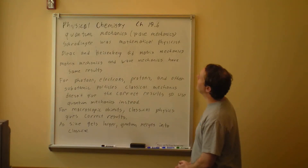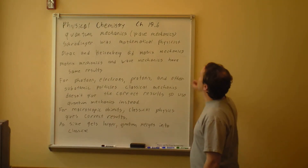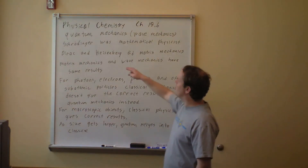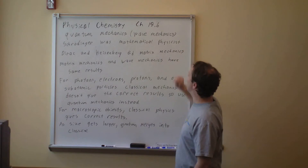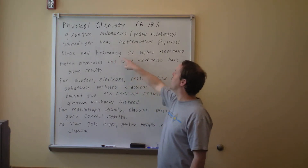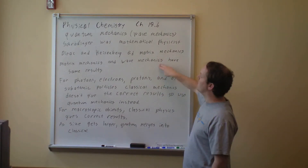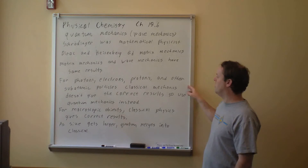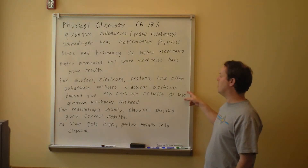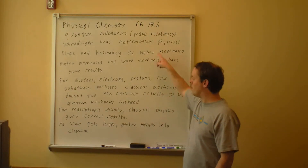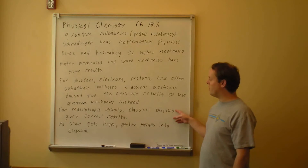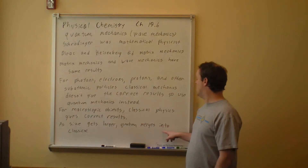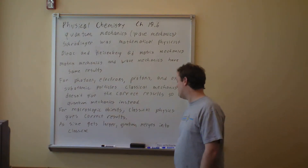Continuing on Physical Chemistry, Chapter 18, Section 6 — now we can finally do quantum mechanics. There are two types: wave mechanics and matrix mechanics. We're only doing wave mechanics. Schrödinger came up with wave mechanics; Dirac and Heisenberg came up with matrix mechanics. Both give the same results so there's no need to learn both. For photons, electrons, protons, and other subatomic particles, classical mechanics does not work — it doesn't give correct results. We need quantum mechanics. For macroscopic objects, classical physics still gives correct results, and as size increases, quantum behavior merges into classical anyway.